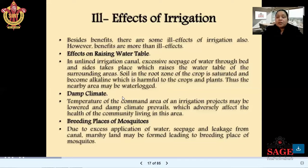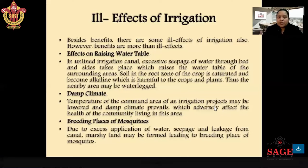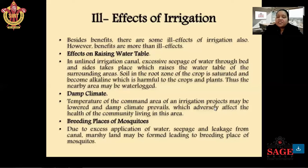Next is the damp climate effect. The temperature of the area around an irrigation project may be lower, and a damp climate may prevail, which adversely affects the health of the community living in that area.